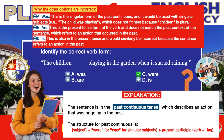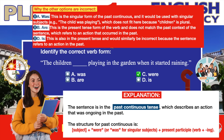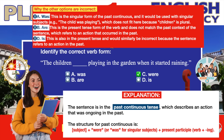Why the other options are incorrect: 'Was' is the singular form of the past continuous and would be used with singular subjects — for example, 'the child was playing' — which does not fit here because 'children' is plural. 'Are' is the present tense form and does not match the past context. 'Is' is also in the present tense and would similarly be incorrect because the sentence refers to an action in the past.